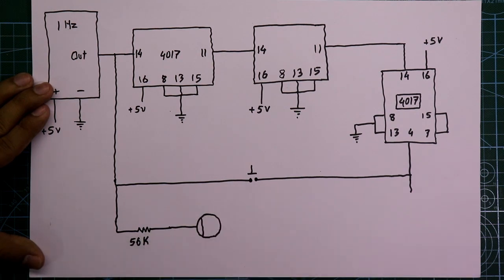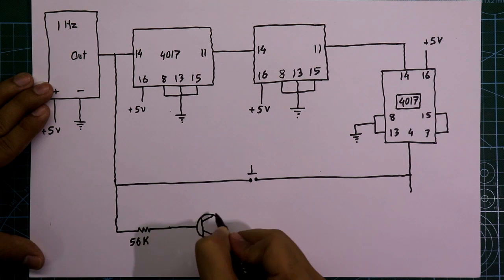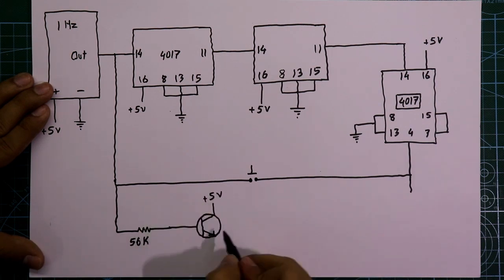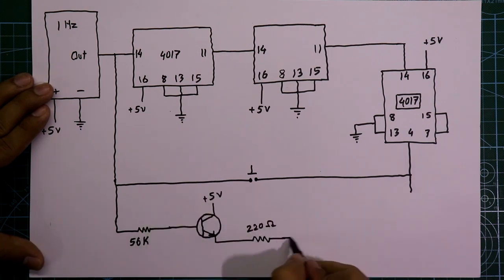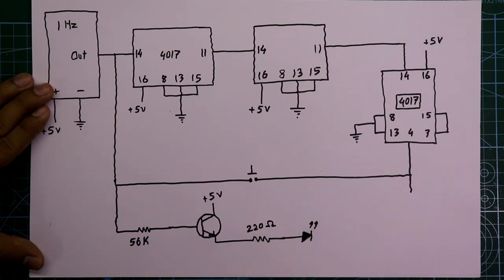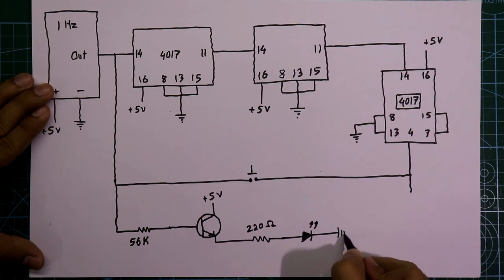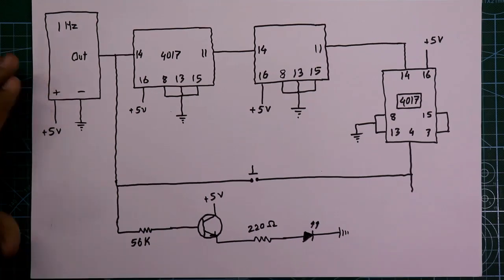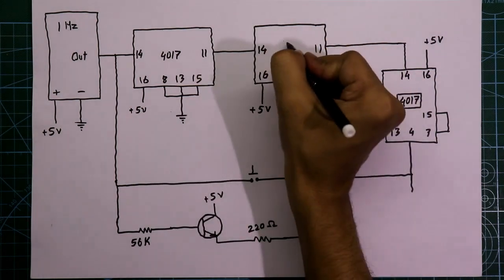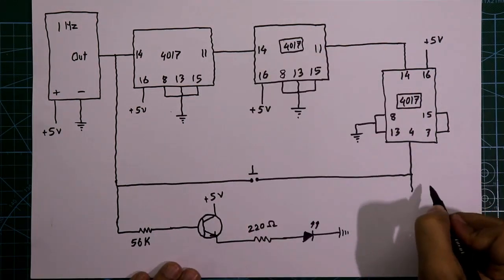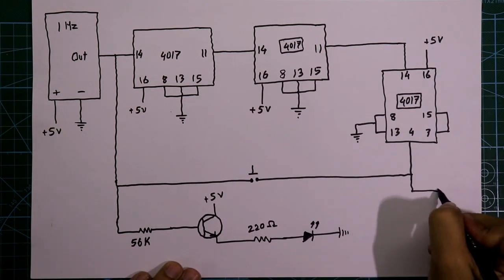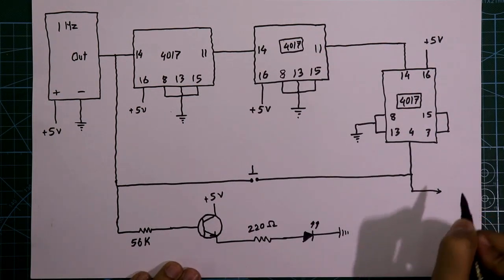Pin number 14 of the first IC is also connected to a 56 ohm resistor, which is then connected to the base of a transistor. The collector is connected to plus 5 volts, and the emitter is connected to a 220 ohm resistor, then to an LED whose negative pin goes to ground. This LED will show the second pulse.